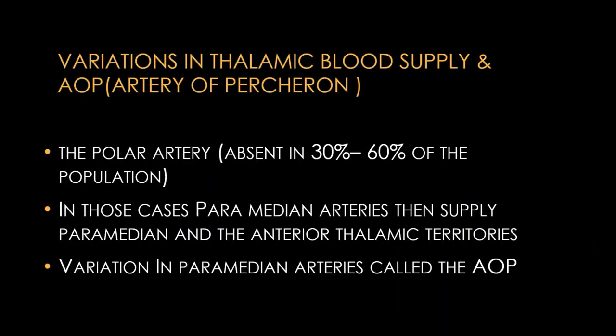There are many variations in thalamic blood supply. One of the most common is the Artery of Percheron. Another is absent polar artery, present in around 30 to 60% of the population. When the polar artery is absent, the paramedian arteries supply both the paramedian region and the anterior thalamic region. This variation in the paramedian artery is called the Artery of Percheron.